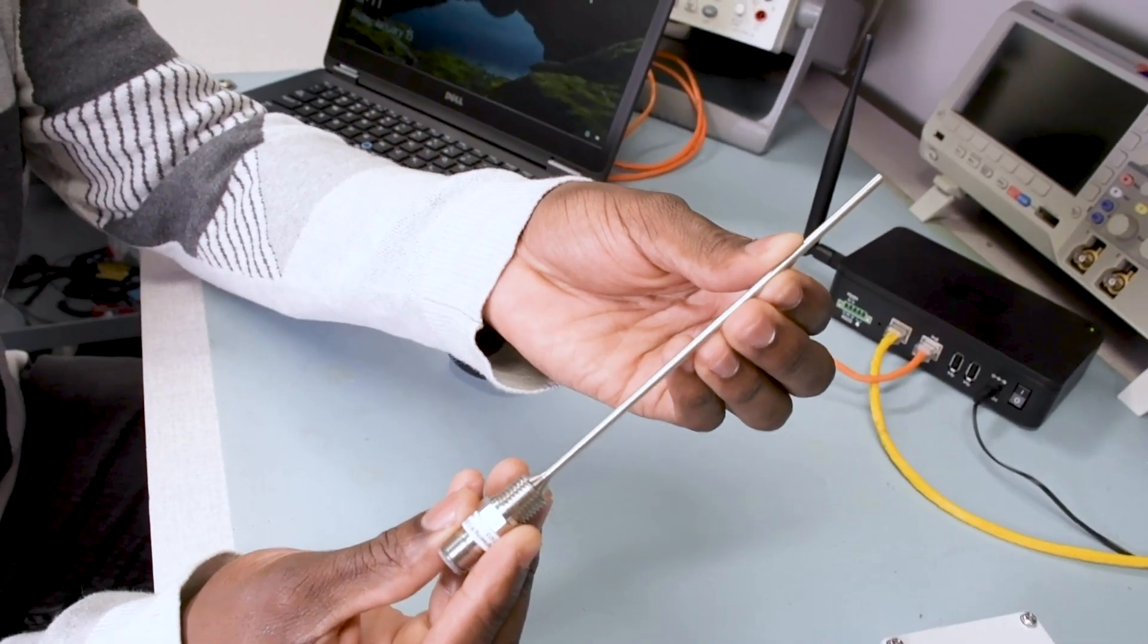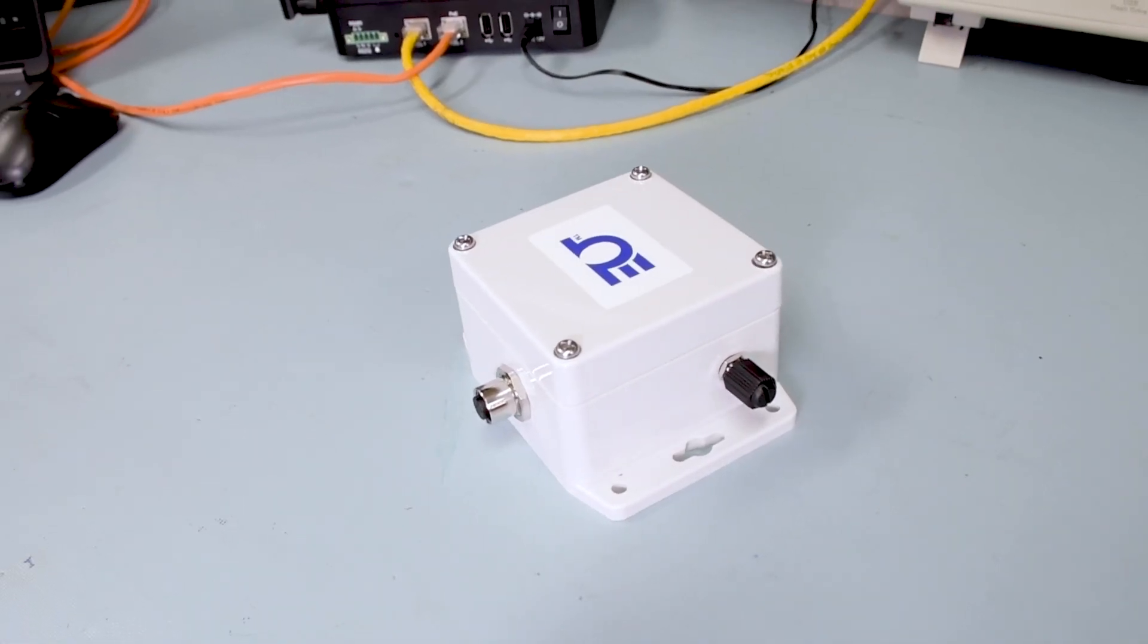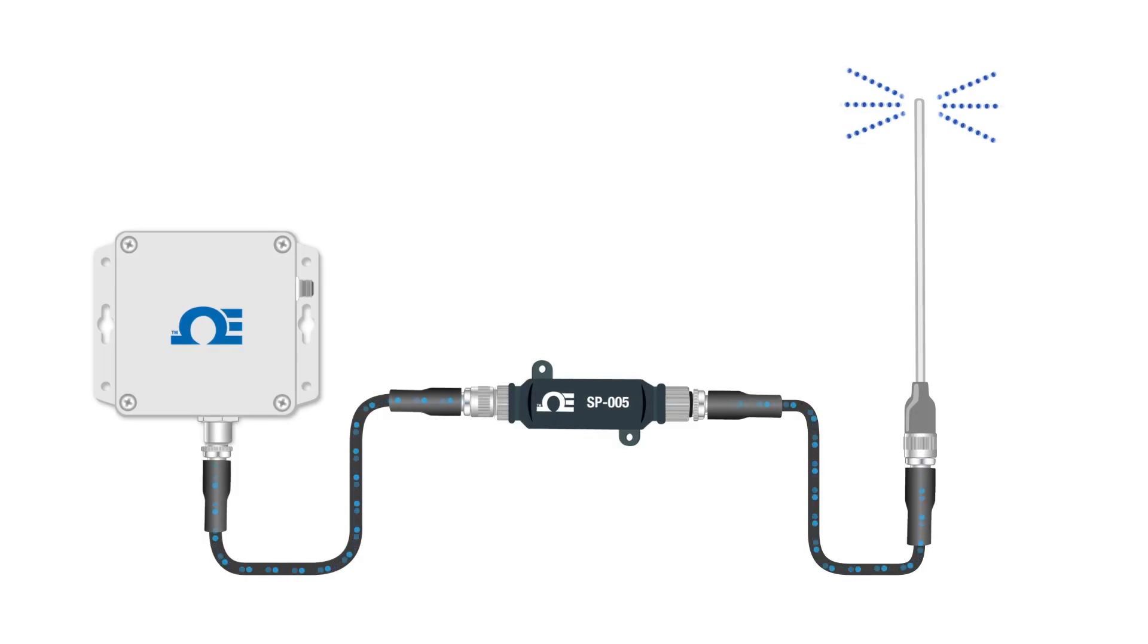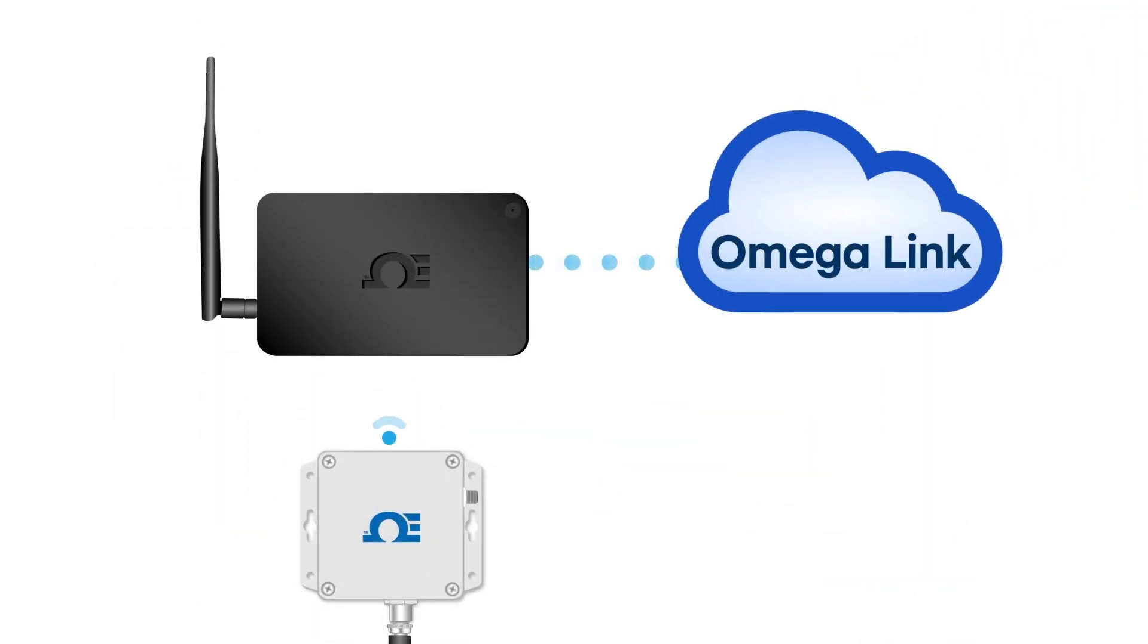In this video, we're going to take the signal from this thermocouple sensor through this SP-005 smart probe into the IF-006, which will transmit that sensor data wirelessly to the OmegaLink gateway, sending the sensor data up into the Omega cloud where it can be accessed from any device from any location at any time.